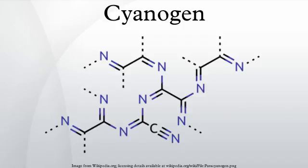It is also used as a stabilizer in the production of nitrocellulose. Cyanogen is a highly toxic compound, and in 1910 a spectroscopic analysis of Halley's comet found cyanogen in the comet's tail. This led to public fear that the Earth would be poisoned as it passed through the tail. Because of the extremely diffuse nature of the tail, there was no effect when the planet passed through it.